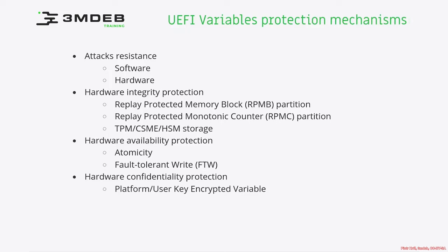First is Replay Protected Memory Block (RPMB) partition, which is supported by some hardware devices like NVMe, Universal Flash Storage, or eMMC. This RPMB is typically used in combination with a trusted execution environment. During the manufacturing process of the storage, an RPMB key is generated, which is fused into one-time programmable (OTP) fuses. This key can then be used to access data stored in the RPMB partition, and it can only be used from the trusted execution environment. To further improve RPMB security, there is also a replay-protected monotonic counter, which also has its own key fused in OTP and is used to avoid replay attacks.